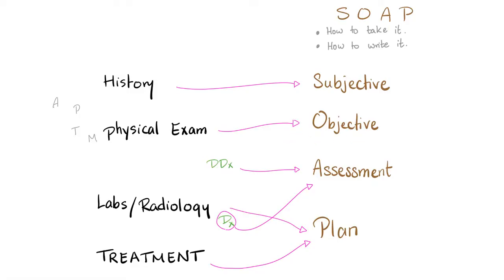The objective is the physical exam, and this includes general exam and special exam. General exam is general — you look at the patient. Is he tall? Short? Thin? Obese? After this, you look at the mood of the patient: does he look happy, depressed, ill, or well? Then the decubitus — is the patient sitting comfortably in bed, or cannot lie down unless there are seven pillows beneath him, or lying on the left or right side?